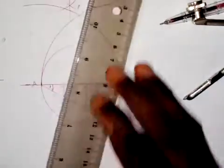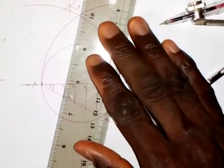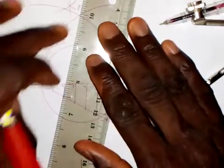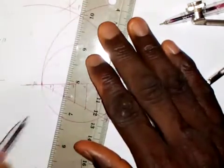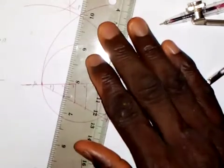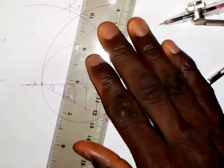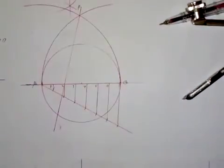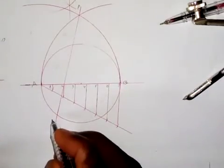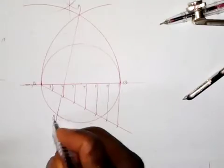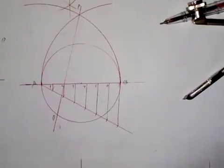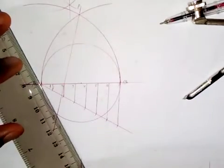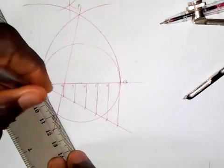The next thing I'm going to do is draw a line from P passing through point 2 — for any regular polygon you want to construct using this method, all you need to do is draw a line from point P passing through point 2. I draw a line from P passing through point 2, and wherever it touches the circle I will call that point D. So I will join A and D together with a straight line.